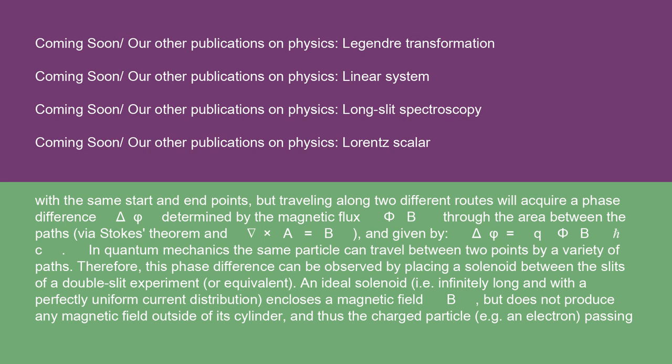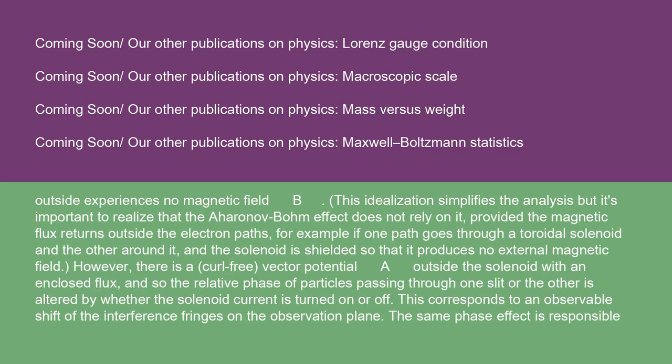In quantum mechanics, the same particle can travel between two points by a variety of paths. Therefore, this phase difference can be observed by placing a solenoid between the slits of a double-slit experiment or equivalent. An ideal solenoid, i.e., infinitely long and with a perfectly uniform current distribution, encloses a magnetic field B but does not produce any magnetic field outside of its cylinder, and thus the charged particle, e.g., an electron, passing outside experiences no magnetic field B. This idealization simplifies the analysis, but it's important to realize that the Aharonov-Bohm effect does not rely on it, provided the magnetic flux returns outside the electron paths.